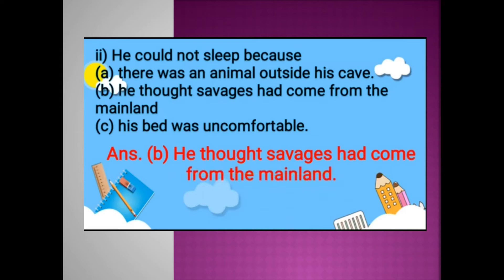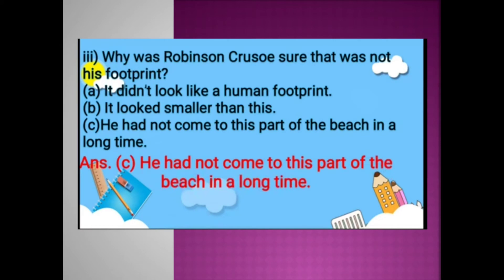Option A: there was an animal outside his cave; option B: he thought savages had come from the mainland; option C: his bed was uncomfortable. Yes, he thought savages had come from the mainland. Next: Why was Robinson Crusoe sure that it was not his footprint? Option A: it didn't look like a human footprint; option B: it looked smaller than his; option C: he had not come to this part of the beach in a long time. Option C is the correct answer.